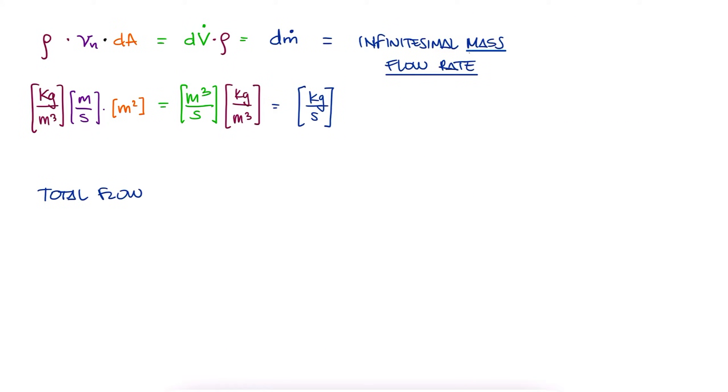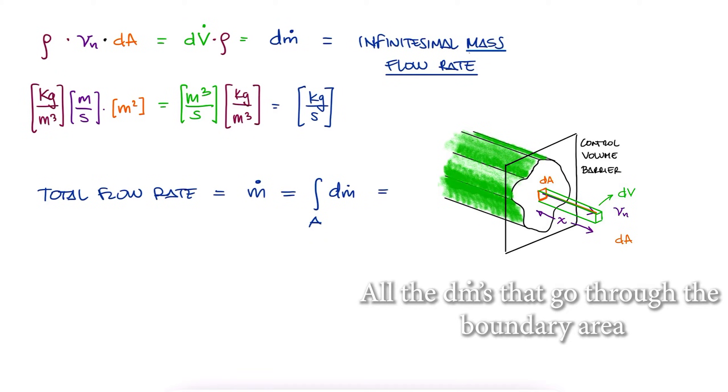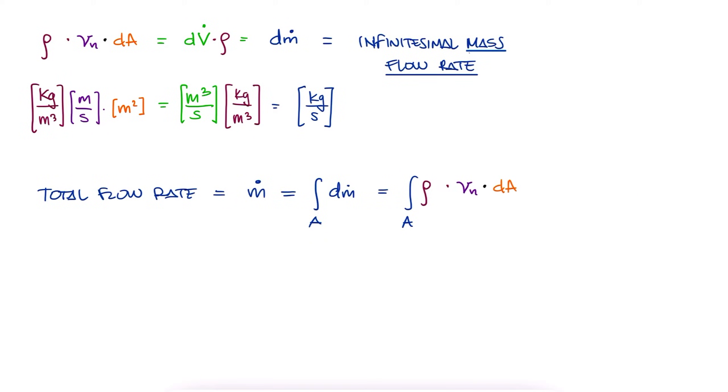The total flow rate, m dot, would be the integral over the area of dM dot, or the integral over the area of density times velocity times dA. From your fluid mechanics course, playlist to that course in the description below if you're interested, you will or already know that the velocity is usually a function of the location within that area.